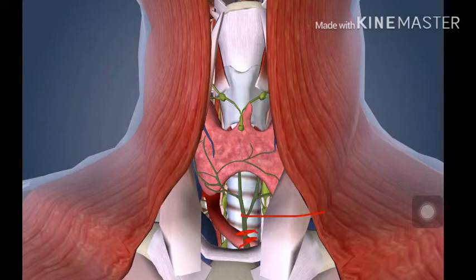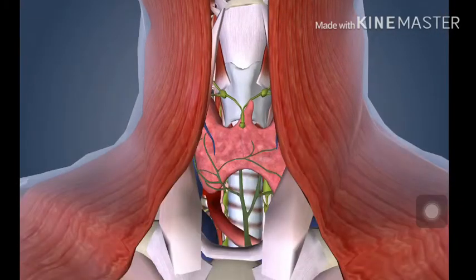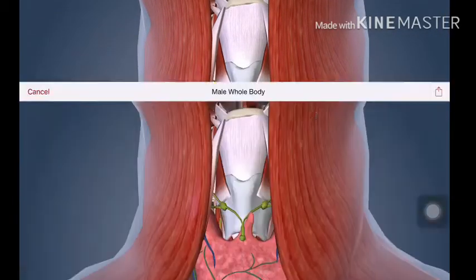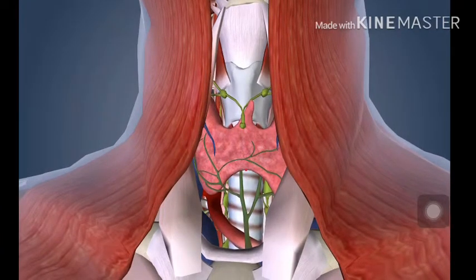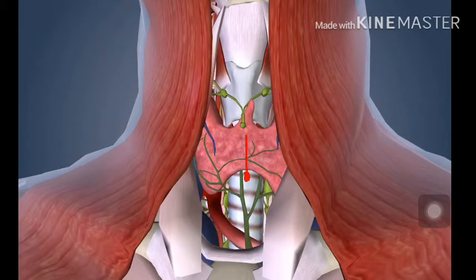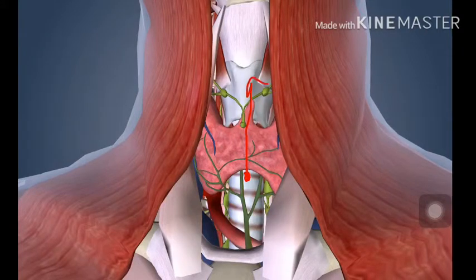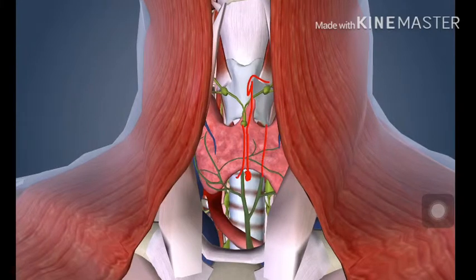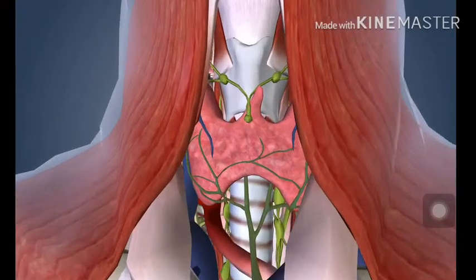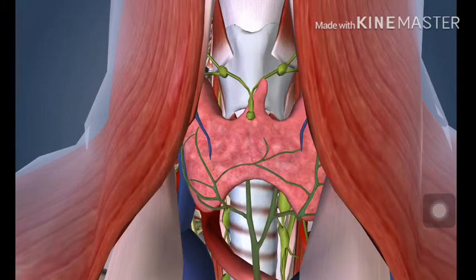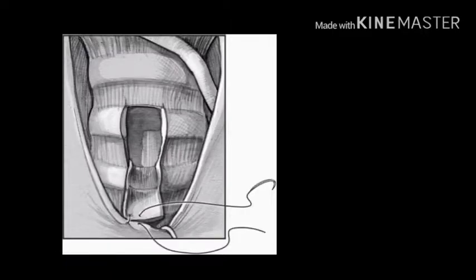Once you've done this, you need to put a cricoid hook here and retract the whole structure superiorly. This brings the trachea closer to the skin surface. You also retract the thyroid gland superiorly.